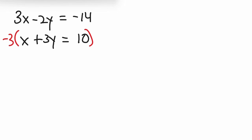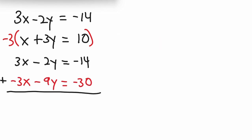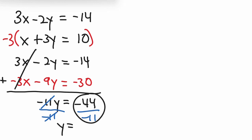We multiply negative 3 through the parentheses: negative 3 times x is negative 3x, negative 3 times 3y is negative 9y, negative 3 times 10 is negative 30. Now let's add this to the first equation. The x terms cancel out. We get negative 2y minus 9y is negative 11y, and negative 14 minus 30 is negative 44. Dividing both sides by negative 11, we get y equals negative 44 divided by negative 11, which is 4.